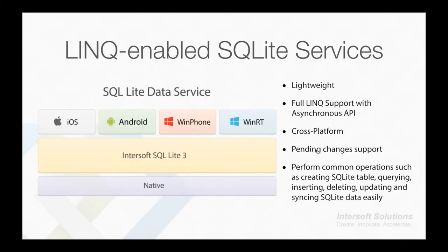For local data access support, Crosslight 2 provides a lightweight SQLite service with full LINQ support and async APIs. Best of all, it works across platforms, allowing you to perform data operations such as creating SQLite tables, querying, inserting, deleting, updating, and syncing SQLite data easily.